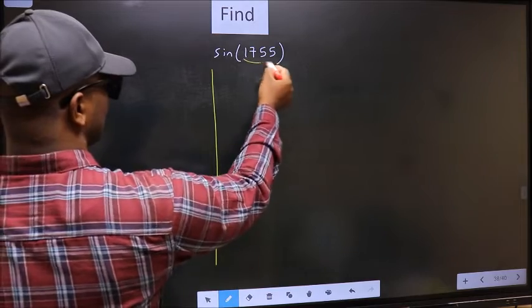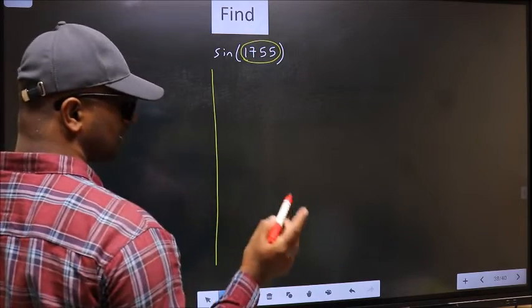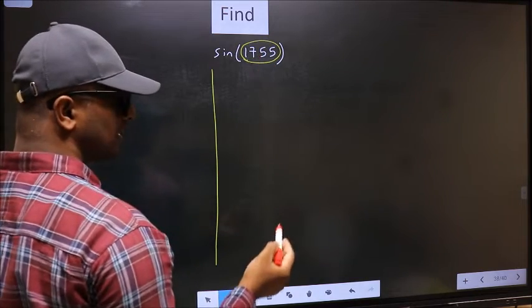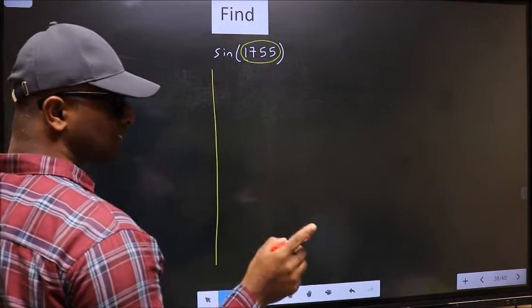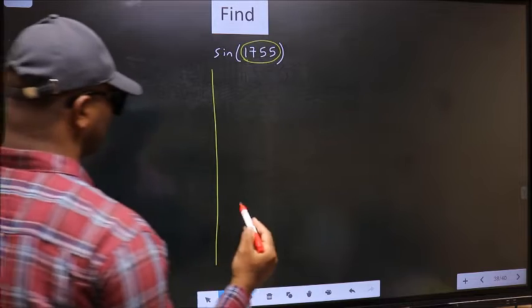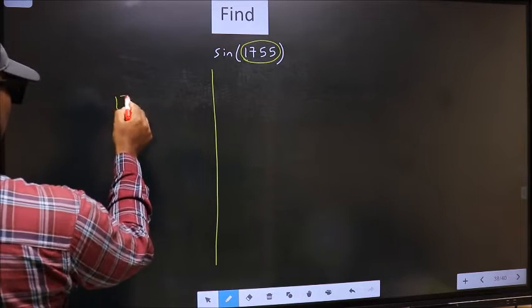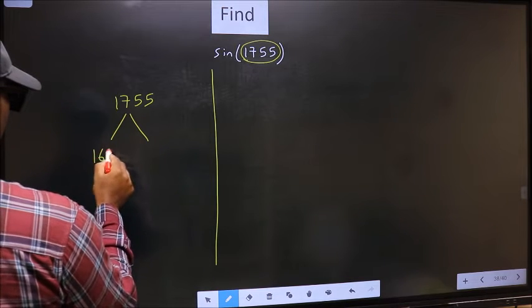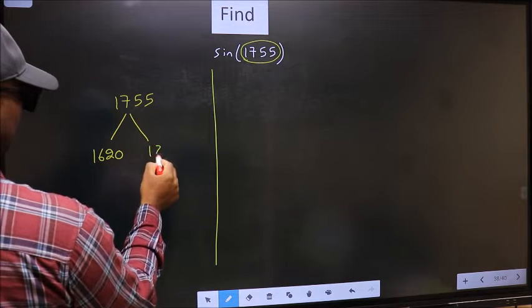Here we have 17 double 5. Now you should check: 17 double 5 lies between which two multiples of 180. What I mean is, 17 double 5 lies between 1620 and 1800.